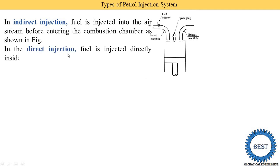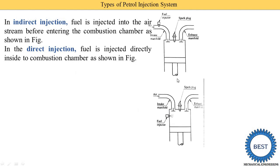In the direct injection method, fuel is injected directly inside the combustion chamber as shown in the figure. In the intake manifold only air enters. Here you can see the combustion chamber, and the fuel injector is placed inside the combustion chamber, so petrol is directly injected inside the combustion chamber.